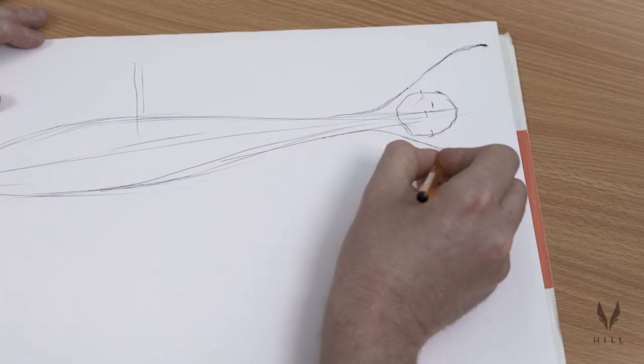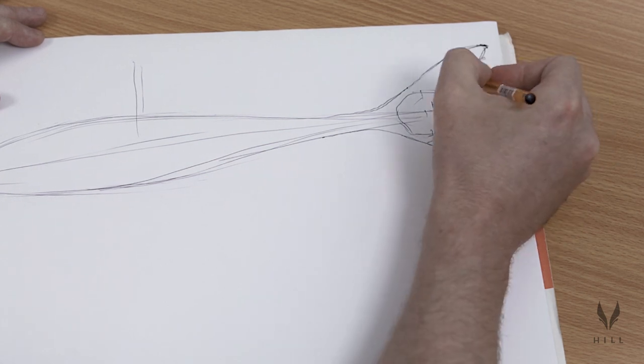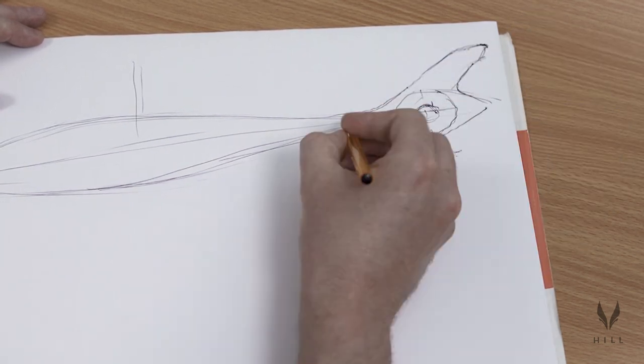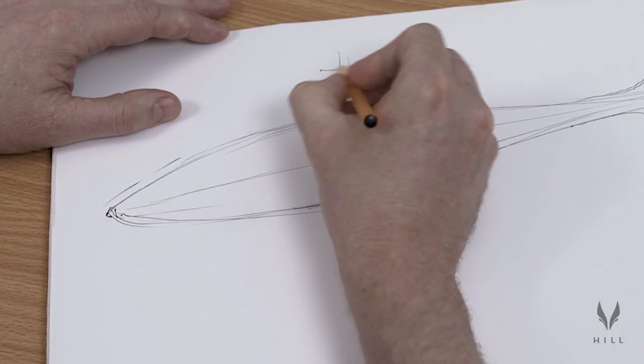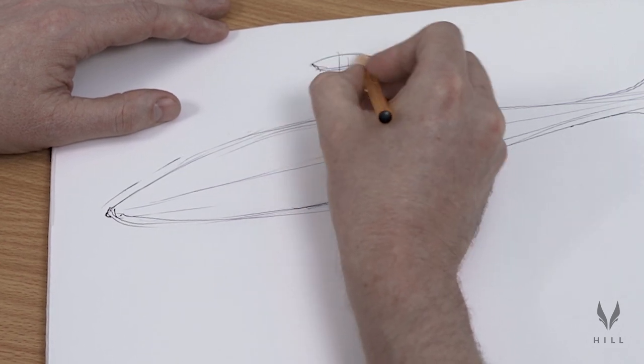What you find when you do that is a lot of the things that you have to do to make a surface beautiful and to make the light flow over the surface elegantly are very closely related to the things that you've got to do to design an efficient aerodynamic body.